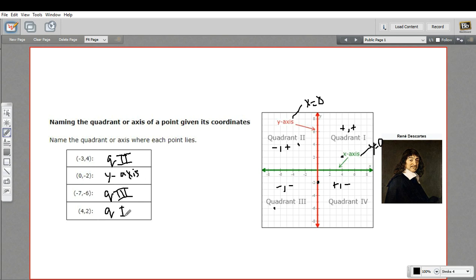So that is how to determine the quadrant or the axis of a point when you just have the coordinates.